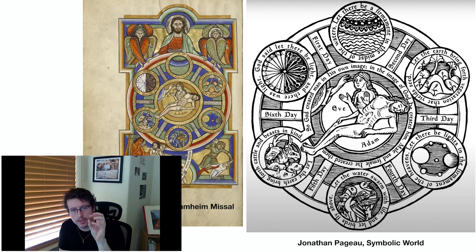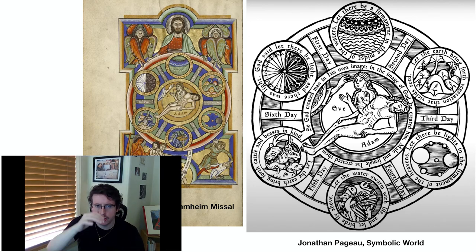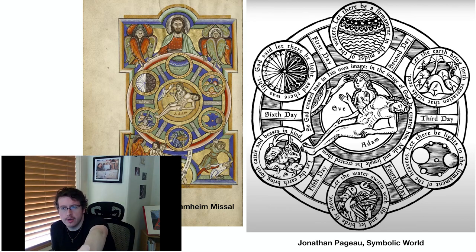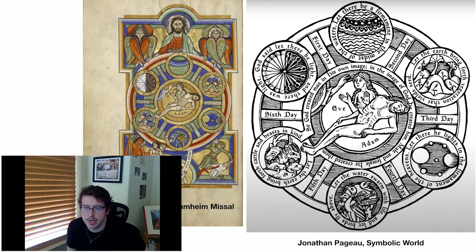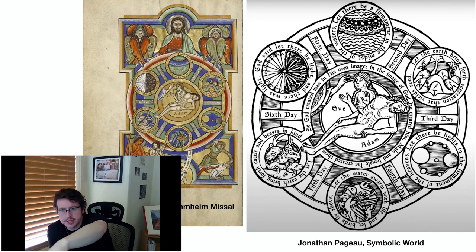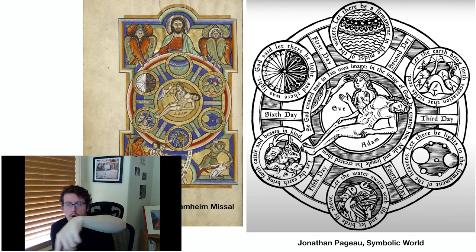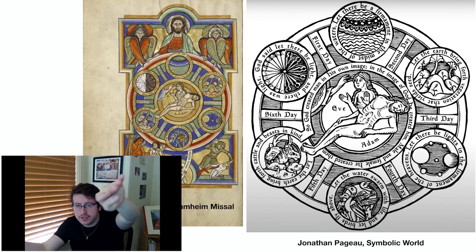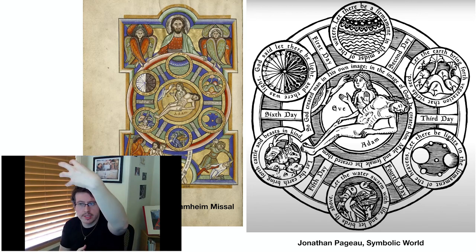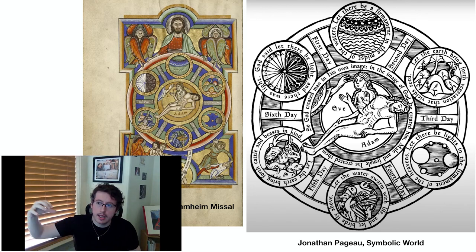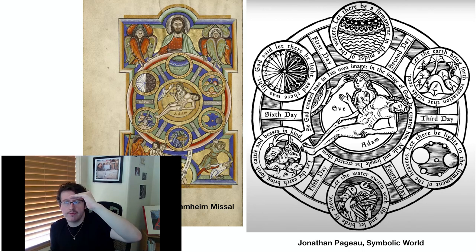I want to end on this symbol here. This is called the Stamheim Missal, a German icon. I want to zoom in on the center part. This is actually Jonathan Pageau's symbol for his YouTube channel, The Symbolic World. This symbol is a great way to capture Genesis. If you look at it, it shows the six days starting in the top left with "Let There Be Light," going clockwise through all the days. Day one and four are across from each other and they're the same thing — but day one is the form of it, the spirit, and day four is the body. Day two is the spirit, day five is the body. Day three is the spirit, day six is the body. You have the spirit above and the body below.